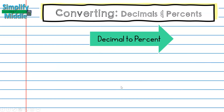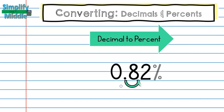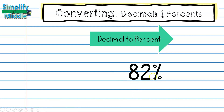We also can go the other direction, from decimal to percent. As you can imagine, it's the same principle. This time, instead of dividing by 100, we're multiplying by 100, so we can move two place values to the right. We'll be moving our decimal over and adding on a percent sign. My decimal is still here, I just haven't written it because there's nothing following the decimal.